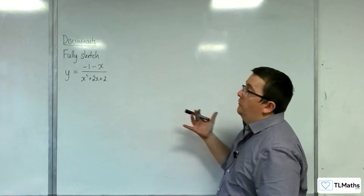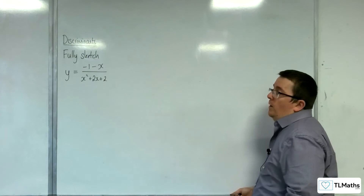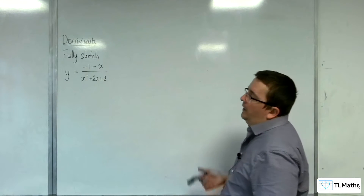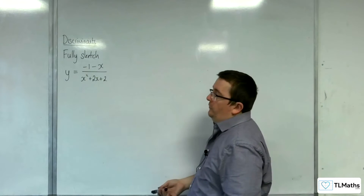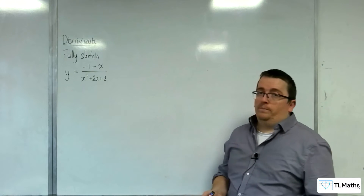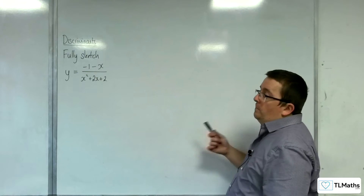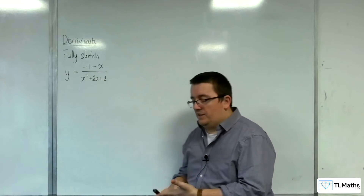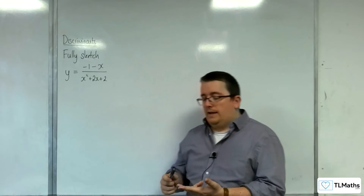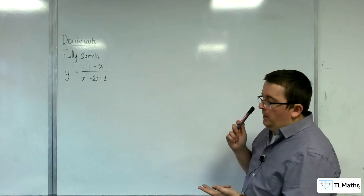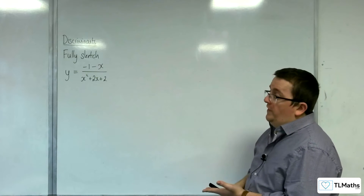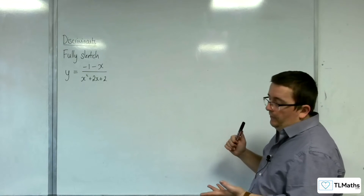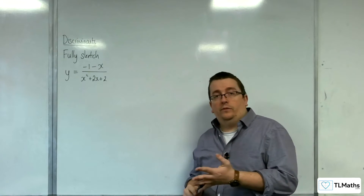In this video, we're going to fully sketch y equals minus 1 take away x over x squared plus 2x plus 2. This means we want to find any vertical asymptotes, horizontal asymptotes, points where it crosses the x-axis and y-axis, and any stationary points.